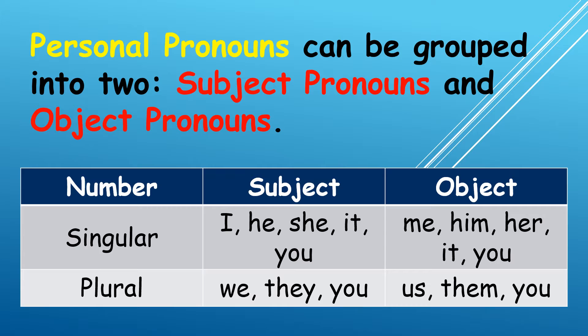Personal pronouns can be grouped into two: subject pronouns and object pronouns. Here is a table that shows us the different subject pronouns and object pronouns, grouped according to their number.